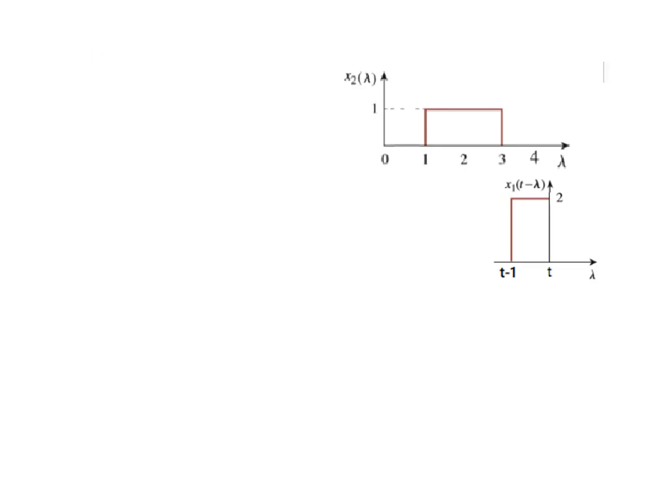And finally, we have moved beyond 4. So t is beyond 4. No more overlap. So our answer will now be 0. T greater than 4. No overlap. So yt is equal to 0 for t greater than 4.